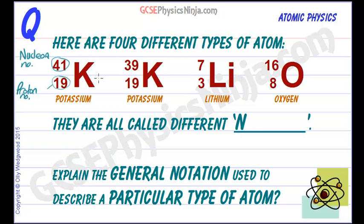We can see we've got two types of potassium atom here — they've both got 19 protons in them, and that keeps them the same element. But this one has got 41 particles in the nucleus, whereas this one has got 39 nucleons. So that means this one has got 22 neutrons (41 minus 19), whereas this one has only got 20 neutrons in the nucleus.